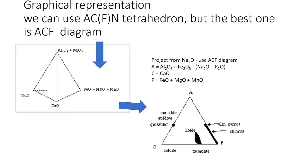For graphical representation of these metabasic rocks, we can use a tetrahedral diagram with apices Al₂O₃ (A), Na₂O (N), CaO (C), and FeO+MgO+Mn (F). Taking the triangle alone gives us the ACF diagram, which we have learned about. We project from Na₂O and use the ACF diagram to represent the metabasites. A = Al₂O₃ + Fe₂O₃ − (Na₂O + K₂O); C = CaO; F = FeO + MgO + Mn.